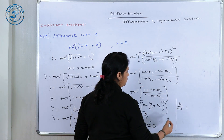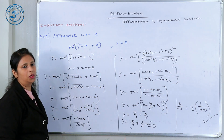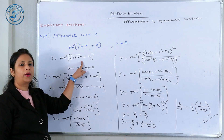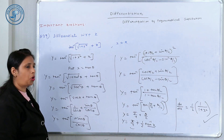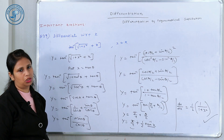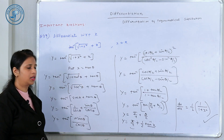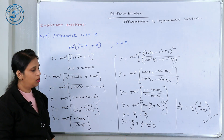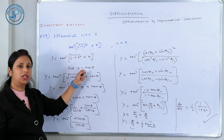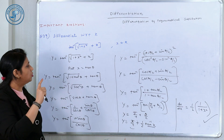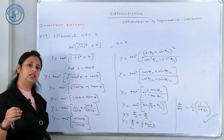Now we do differentiation, which is very easy. The derivative of π/4 is 0, and the derivative of (1/2) tan⁻¹ x is 1/(2(1 + x²)). So dy/dx = 1/(2(1 + x²)). Remember: if you have 1 + x², put x = tan θ; if 1 − x², put sin θ or cos θ; and if x² − 1, put sec θ, because sec²θ − 1 = tan²θ.